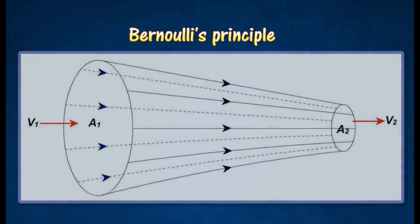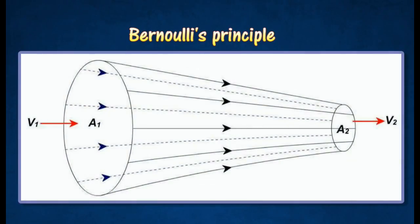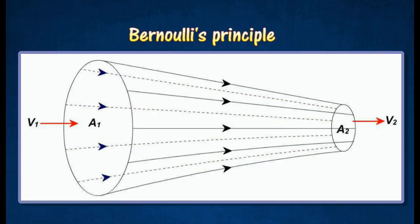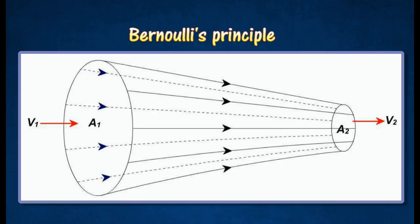Consider an incompressible fluid flowing through a pipe which becomes increasingly narrower. The fluid is moving in a horizontal direction and encounters a pressure difference. This pressure difference will result in a net force, which by Newton's second law of motion will cause an acceleration of the fluid.